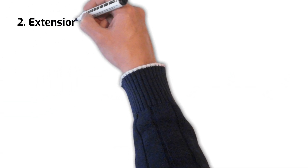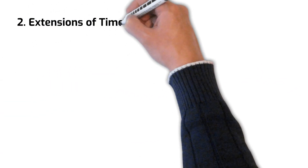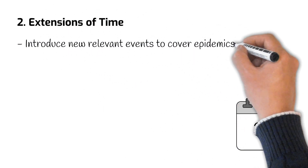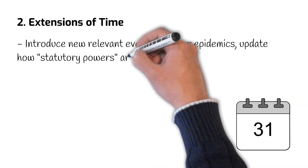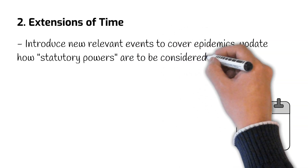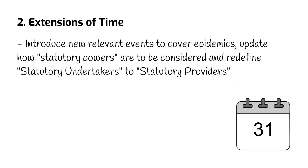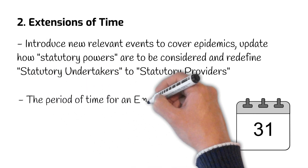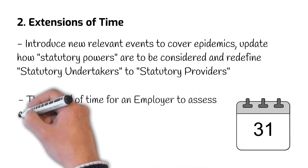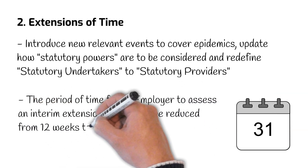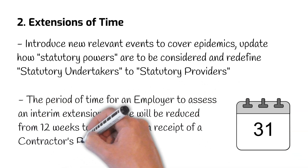Number 2: Extensions of Time. The 2024 edition of JCT will introduce new relevant events to cover epidemics, update how statutory powers should be considered, and redefine statutory undertakers to statutory providers. In addition, the period of time for an employer to assess an interim extension of time will be reduced from 12 weeks to 8 weeks from receipt of contractors' particulars.